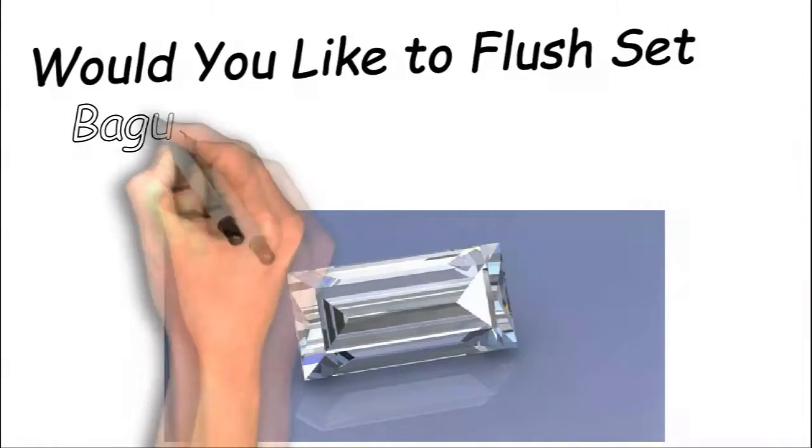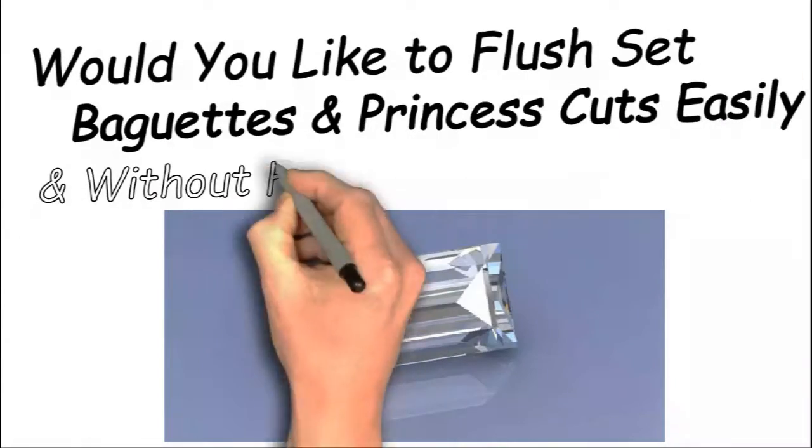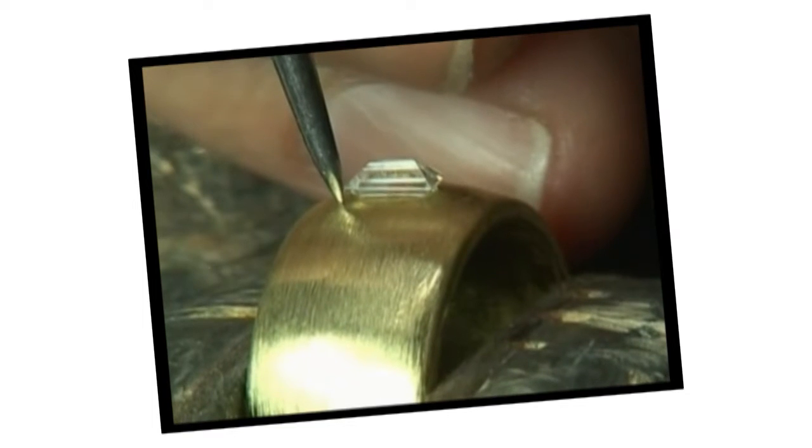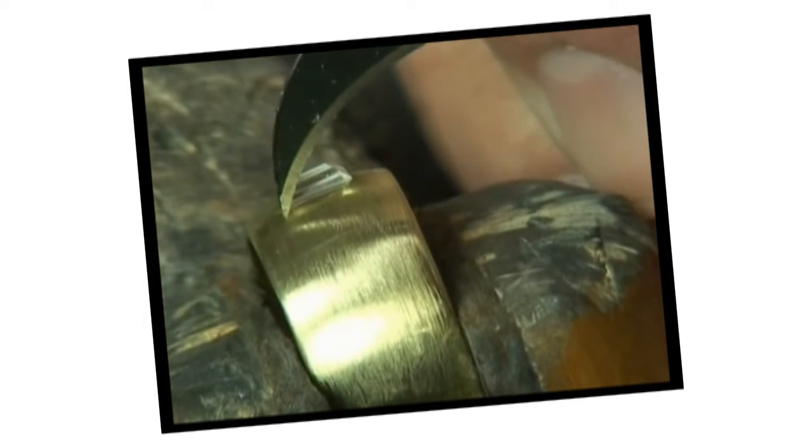Would you like to flush set baguettes and princess cuts easily and without fear of chipping them? Using a scribe will cause the line to be a little big because the taper of the scribe will not mark the line precisely to the size of the diamond.